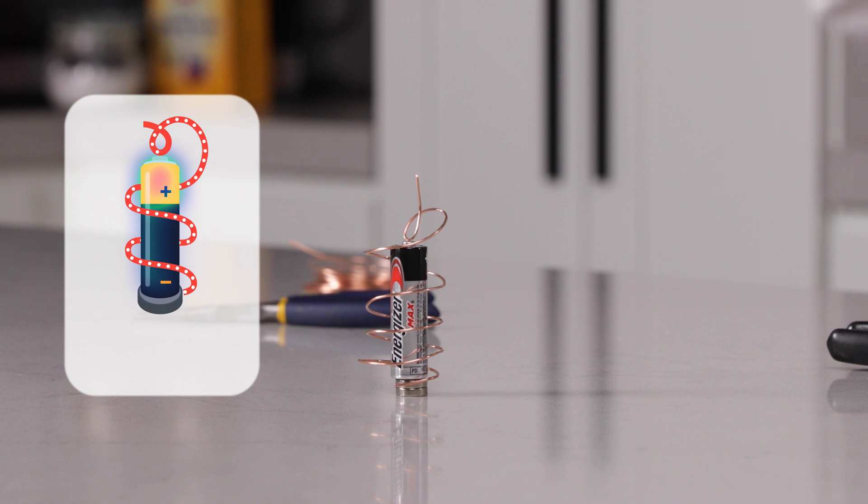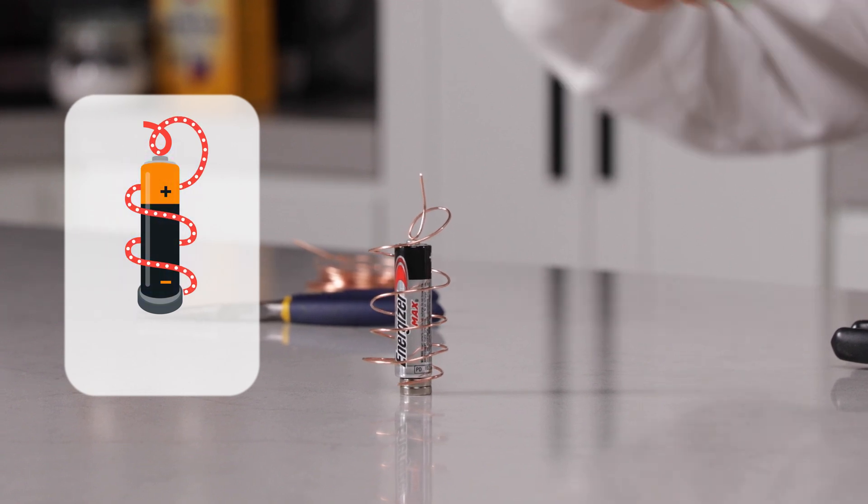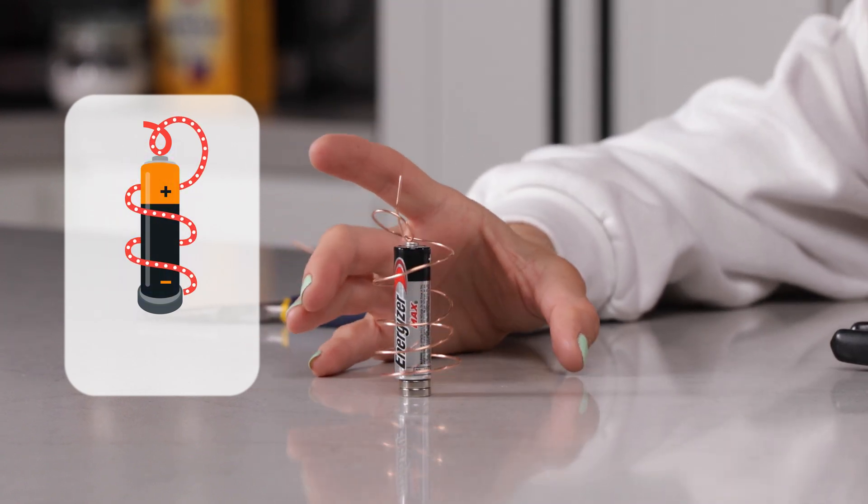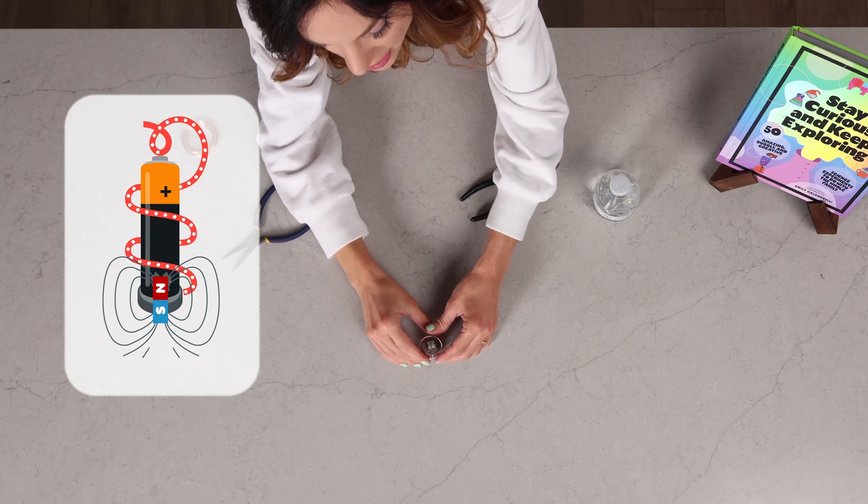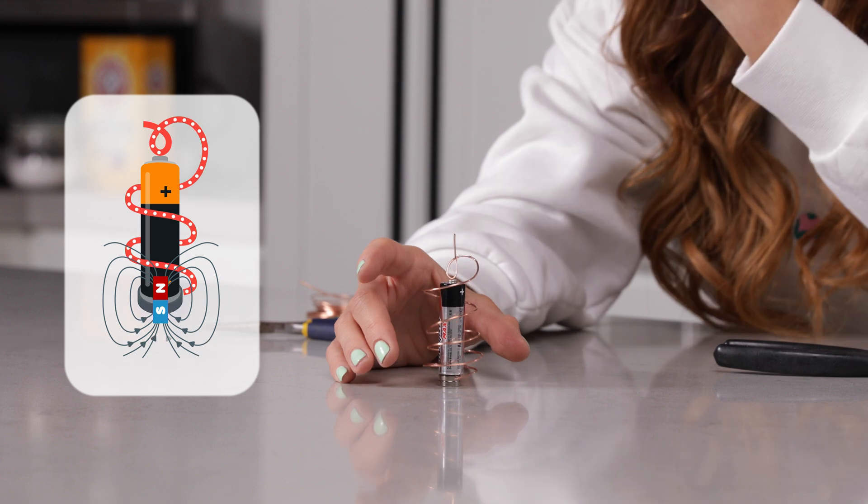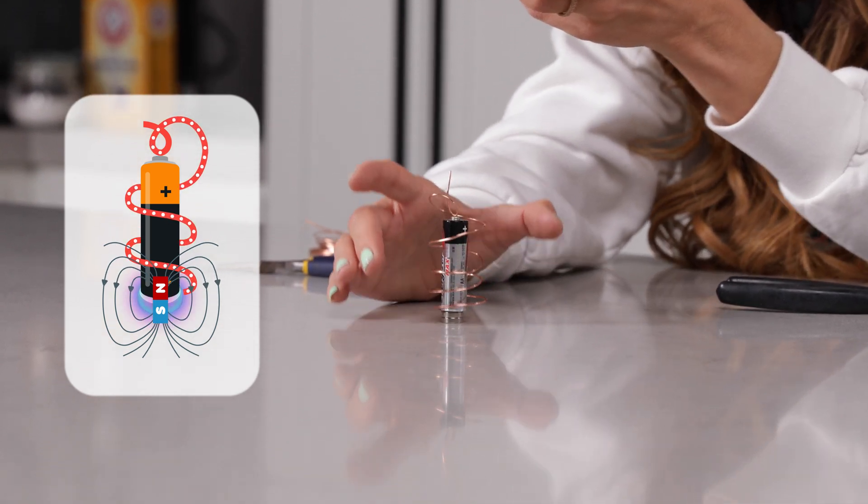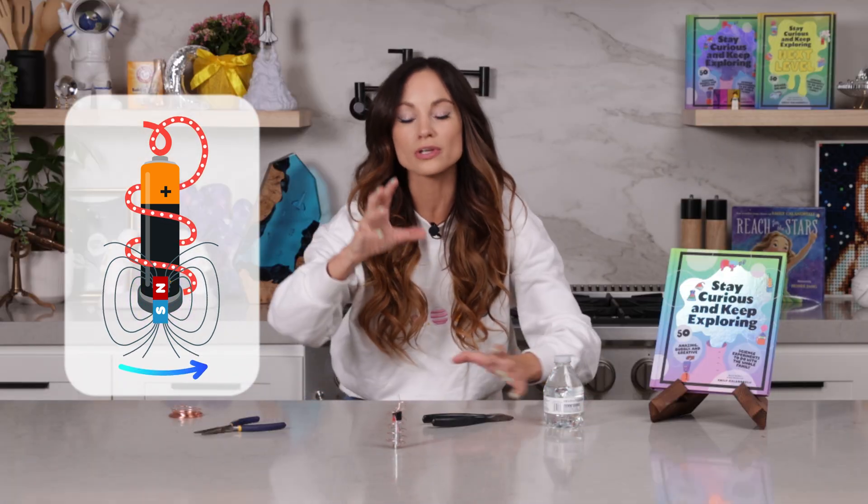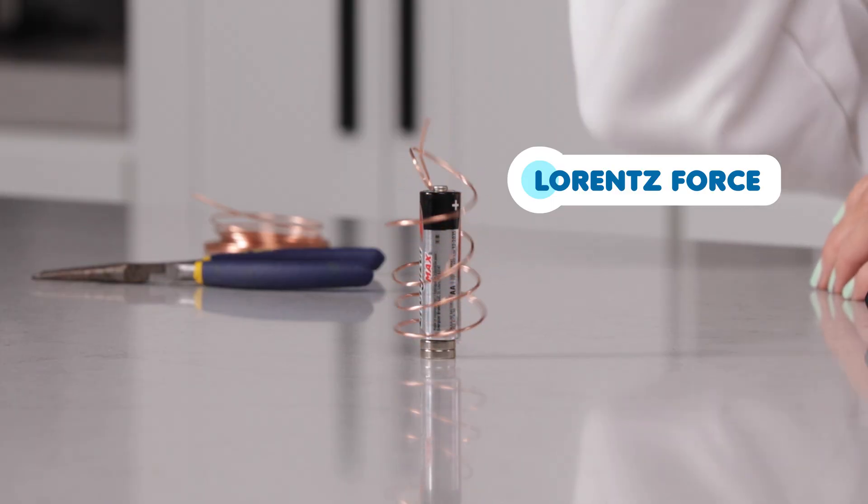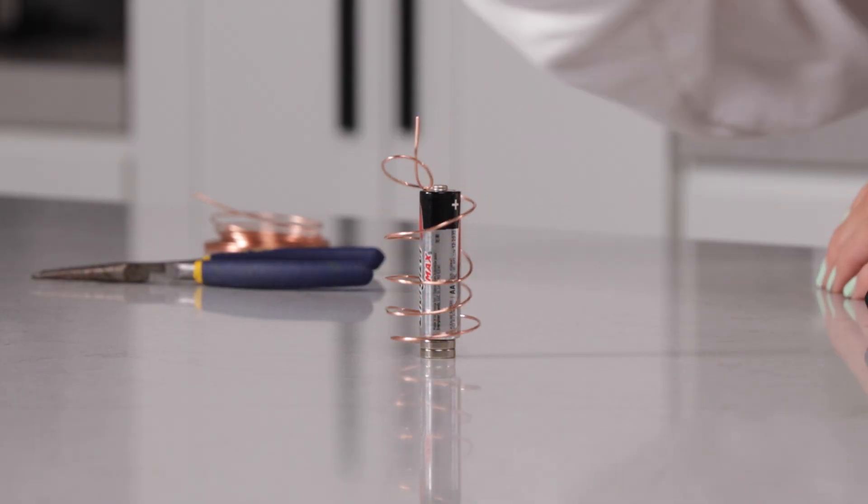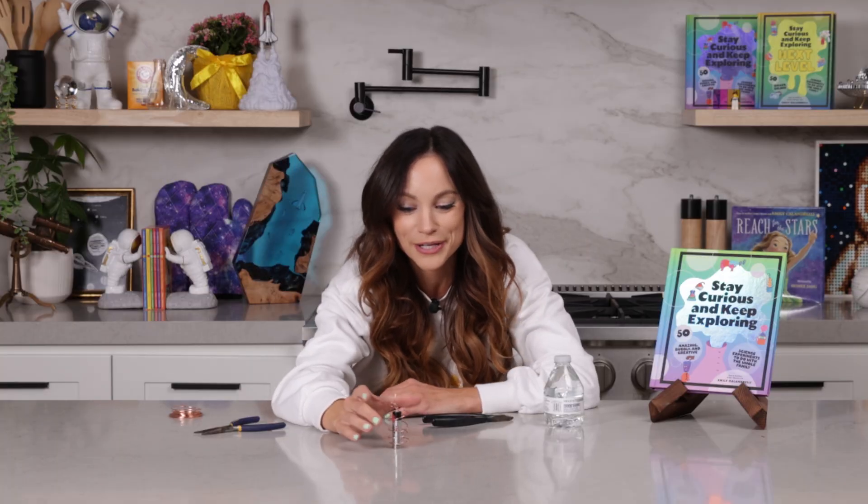How about that? So why is this happening? Well, the battery is providing a sea of electrons that are moving through your copper wire. And when you have a current carrying wire in the presence of a magnetic field, and our magnet is providing the magnetic field, you get something called the Lorenz force. The Lorenz force is an electromagnetic force that is pushing on your wire, forcing it around your battery.